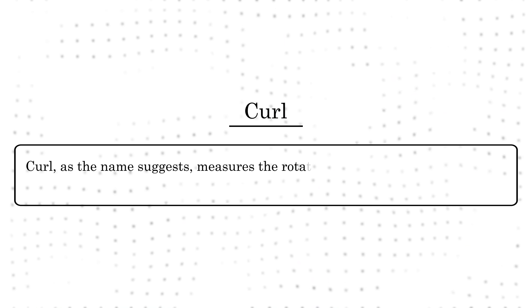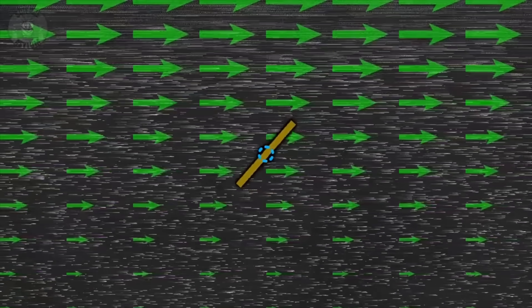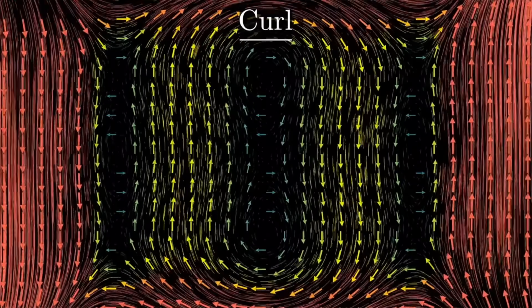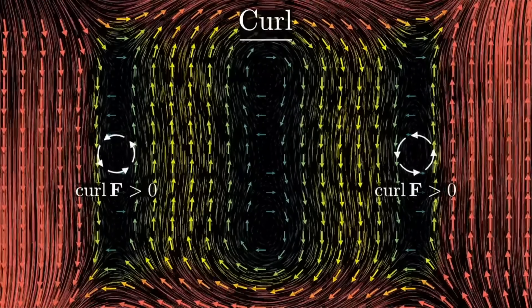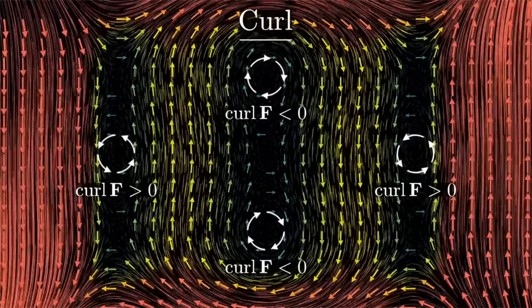Curl, as the name suggests, measures the rotation or twistness of a fluid at any given point. For an analogy, suppose you drop a tiny twig into a flowing river. If the twig starts spinning in place, there is a curl at that point. In regions where the rotation is clockwise, the curl would be positive, while the curl would be negative in the region where the rotation is counterclockwise.